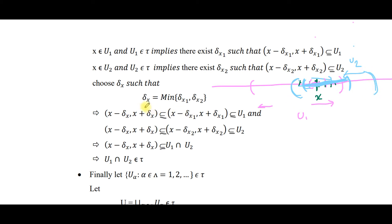We take δ = min(δ₁, δ₂). Then (x−δ, x+δ) ⊆ (x−δ₁, x+δ₁) ⊆ U₁, and (x−δ, x+δ) ⊆ (x−δ₂, x+δ₂) ⊆ U₂. Therefore (x−δ, x+δ) ⊆ U₁ ∩ U₂, meaning we get an open interval that is a subset of U₁ ∩ U₂, and hence U₁ ∩ U₂ belongs to τ.